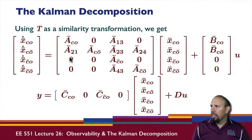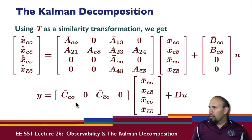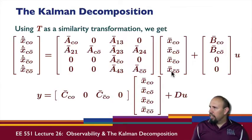When we apply the transformation, we get a bunch of zeros appearing in various places. This is a block triangularizing transformation. Notice that there are zeros in certain positions: zeros here mean the system is not controllable, and a zero here means the system is not observable. We can identify the controllable, uncontrollable, and observable subspaces from this structure.